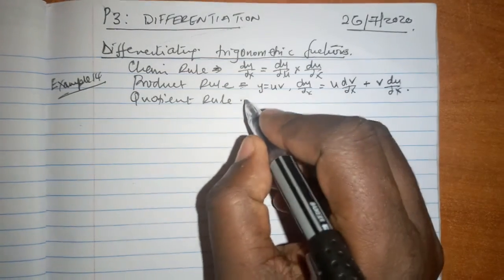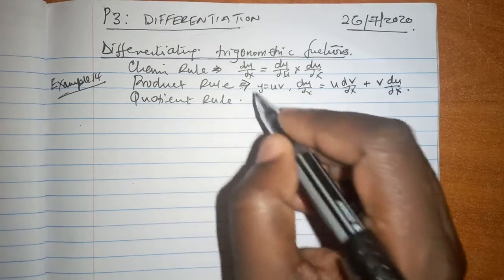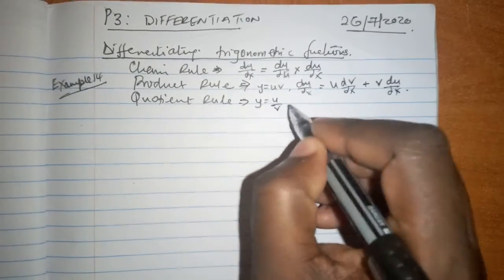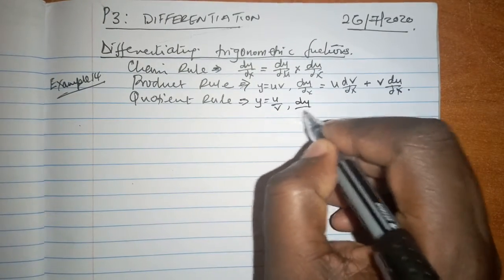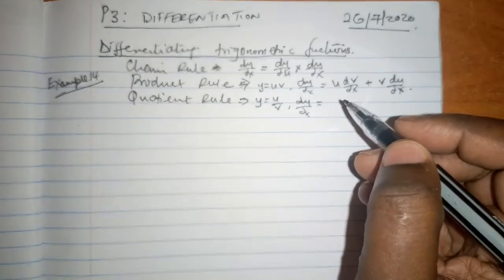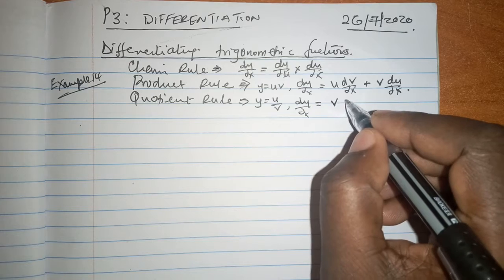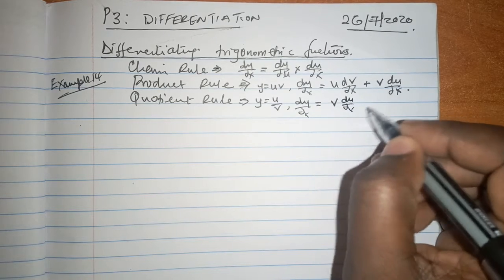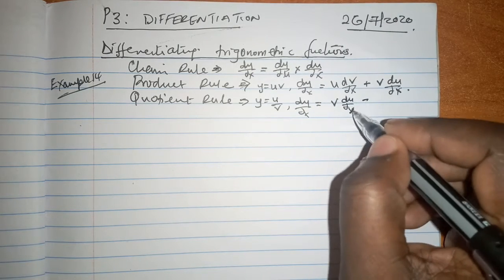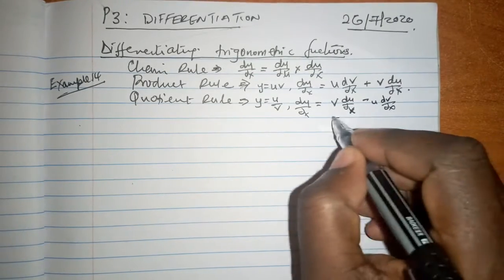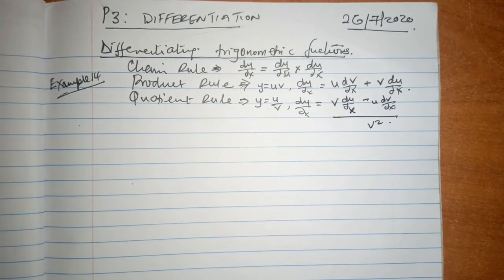We have learnt about the quotient rule and in this one we have said: if you have y is equal to u/v, then dy/dx is always given by the denominator v multiplied by du/dx minus the numerator u multiplied by dv/dx, everything over v squared. All those rules we remember them.